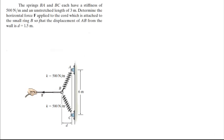Alright guys, let's do this problem that says the springs BA and BC each have a stiffness of 500 N/m and an unstretched length of 3 meters. Find the horizontal force F applied to the cord which is attached to the small ring B so that the displacement of AB from the wall is 1.5 meters. They're telling you that this distance right here is 1.5 meters and this distance right here is 3 meters.